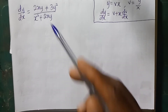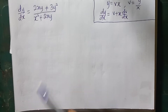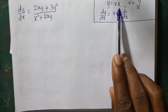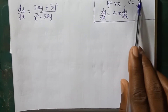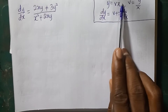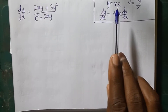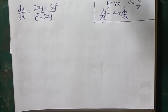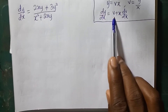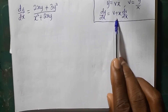Remember, in a homogeneous differential equation, you cannot separate the variables. Hence, we substitute y equals vx, where v equals y over x. By differentiating y with respect to x, where v is also a function of x, we get dy over dx equal to v plus x dv over dx.